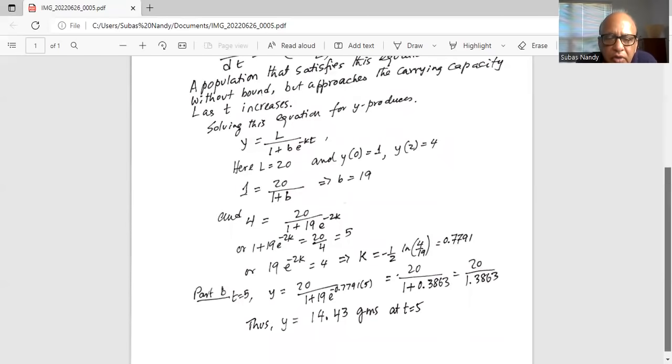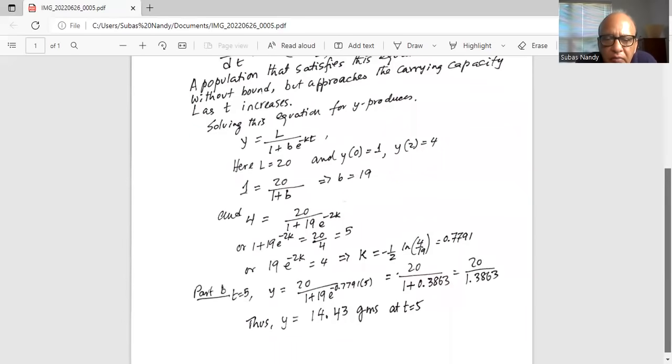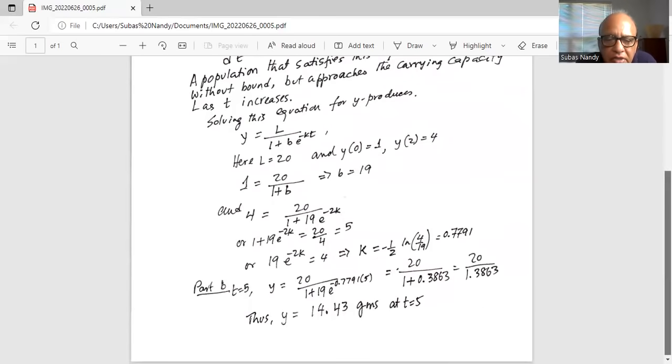So we substitute y equals 20 divided by 1 plus 19 times e to the power of minus 0.7791 times 5, and that becomes 20 divided by 1.3863. So y equals 14.43 grams at t equals 5 hours.